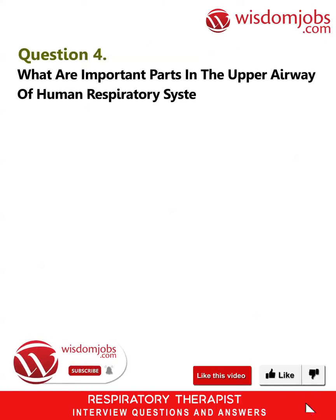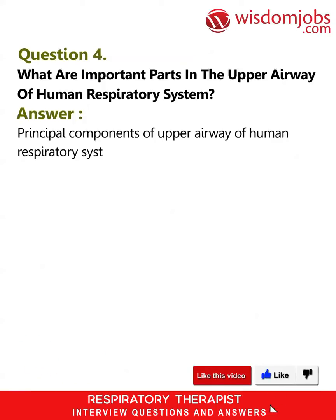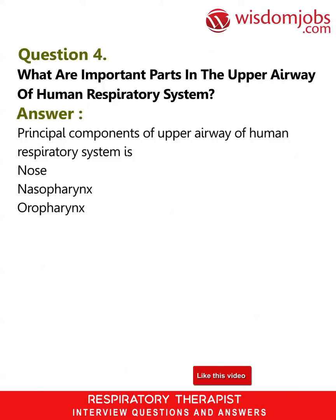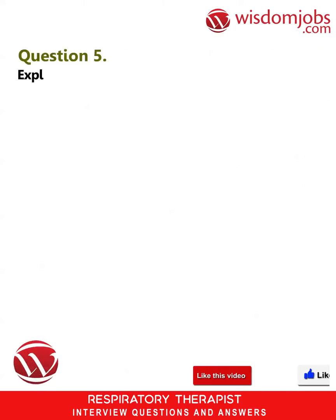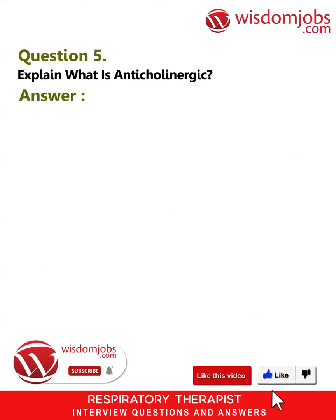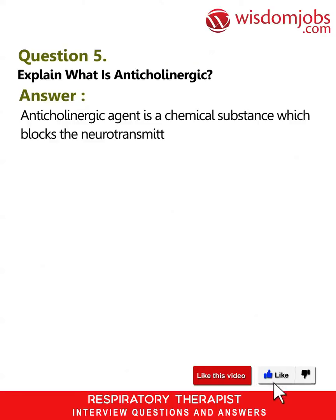Question 4: What are the important parts in the upper airway of the human respiratory system? Answer: The principal components of the upper airway of the human respiratory system are the nose, nasopharynx, oropharynx, laryngopharynx, and larynx.